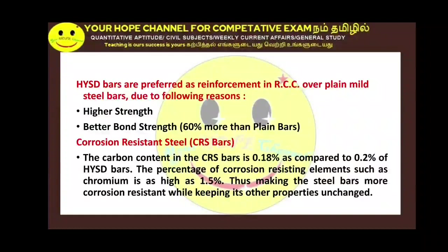We use the yield strength of steel. The characteristic strength is the yield strength. For FE415, the yield strength is 415 N/mm². The ultimate tensile strength — the maximum strength — for FE415 is 485 N/mm². For FE500, it is 545 N/mm². Check the description for details.